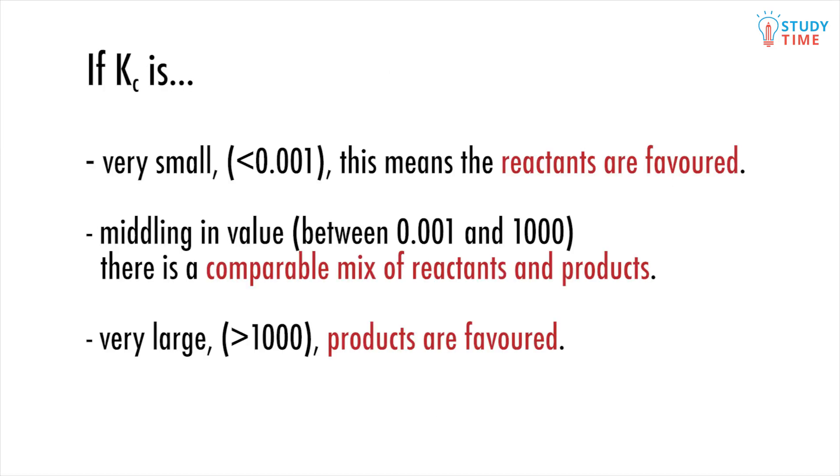In the actual exam, you will be given numerical values which tell you about the nature of the equilibrium. If K sub C is very small, as in less than 0.001, this means the reactants are favoured. If K sub C is middling in value between 0.001 and 1000, there is a comparable mix of reactants and products and neither is significantly favoured. But if K sub C is very large, greater than 1000 say, products are favoured.